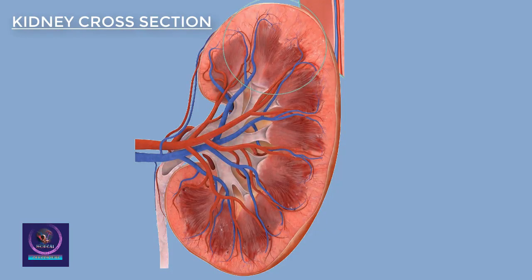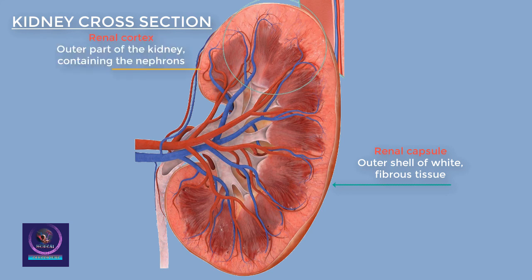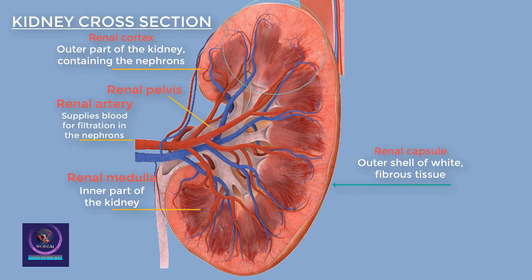Kidney Cross-Section: The kidney is enclosed within a capsule and comprises the cortex, medulla, and renal pelvis. Blood supply enters through the renal artery and leaves via the renal vein.